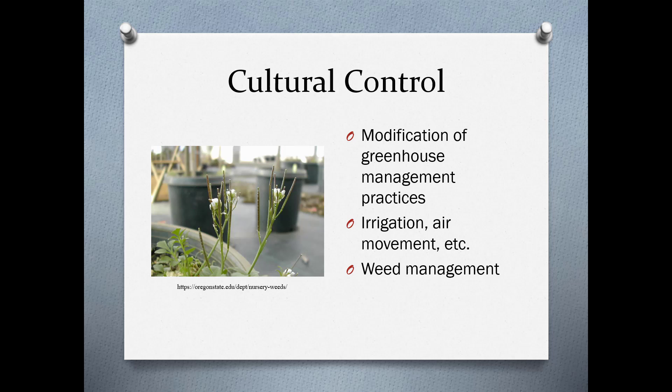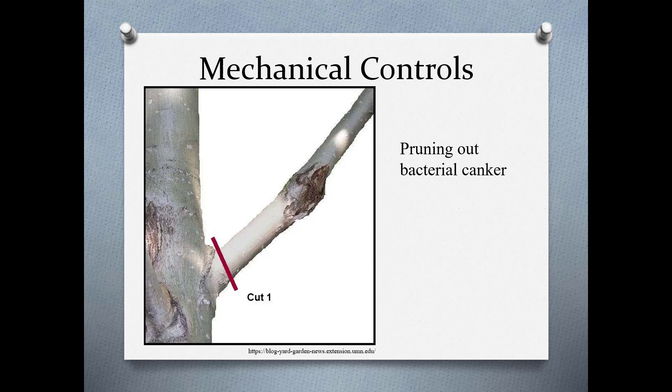Cultural controls involve modifying greenhouse management practices: using the right irrigation, providing air movement, and keeping weeds to a minimum. Bittercress is a very common weed in the landscape and nursery, and each plant can generate up to 5,000 seeds. It's a problem not only for having weeds in your plant material, but also because insects can harbor there and viruses can reside on weeds without showing symptoms. It's really important that containers, floors, and the perimeter around your greenhouse are all clean of weeds.